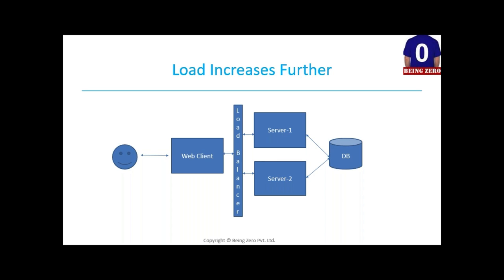Now let's say we have multiple servers and the load keeps increasing. We have enough processing power and RAM, but the application is still slow - I go to my Facebook page and wait a minute for it to load. The bottleneck is now the database. We can add indexing, and in a relational database we can denormalize data and remove joins. We might also think about NoSQL, or code optimization to use more efficient algorithms.